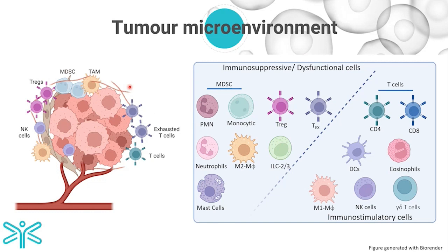Immune cells are a very critical component of the tumor microenvironment. Based on the context of the tumor, there is a dichotomy in the relationship between immune cells and tumors. There is a set of immune cells that promote tumor progression, with prime examples being regulatory cells such as myeloid-derived suppressor cells or regulatory T-cells. There is another set of immune cells that are dysfunctional, with a prime example being exhausted T-cells. And there are fully functional memory CD8 T-cells, NK cells, and gamma-delta T-cells that suppress tumor growth. Many therapeutics try to secure the balance in favor of immunostimulatory cells.